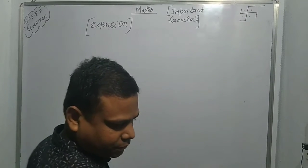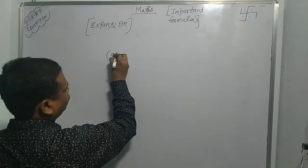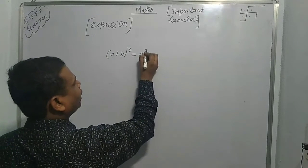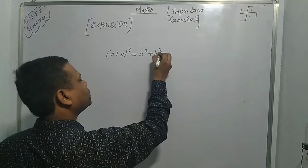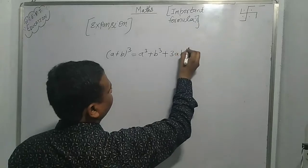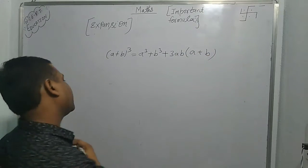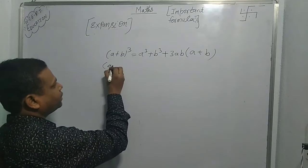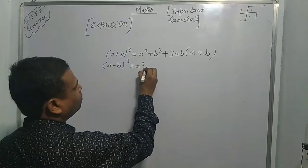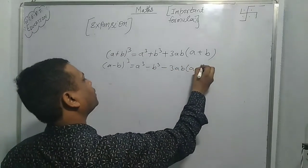The next formula is a plus b whole cube. A plus b whole cube equals a cubed plus b cubed plus 3ab(a plus b). Similarly, a minus b whole cube equals a cubed minus b cubed minus 3ab(a minus b).